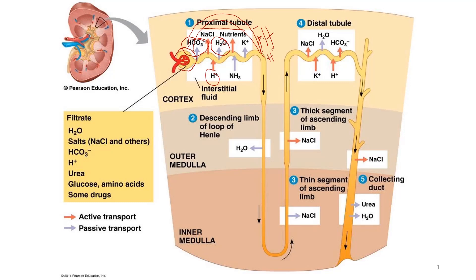Reabsorption of water continues as filtrate moves into the descending limb of the loop of Henle. Here, numerous water channels formed by aquaporins are present. In contrast, there are almost no channels for salt and other small solutes, resulting in very low permeability for these substances. For water to move out of the tubule by osmosis, the interstitial fluid bathing the tubule must be hyperosmotic to the filtrate.